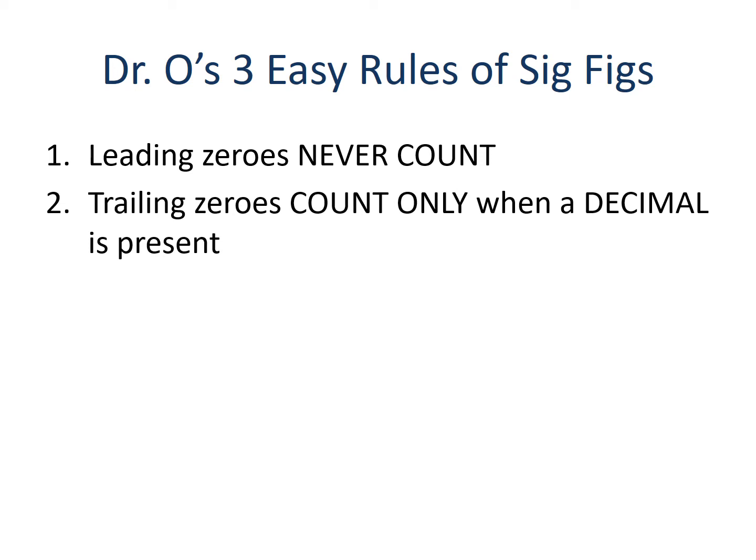Rule number two states that trailing zeros count only when a decimal is present. When your number has one or more zeros at the end, those zeros will count as significant figures only if you see a decimal somewhere in the number. If there's no decimal, those zeros don't count. Just look for the decimal.